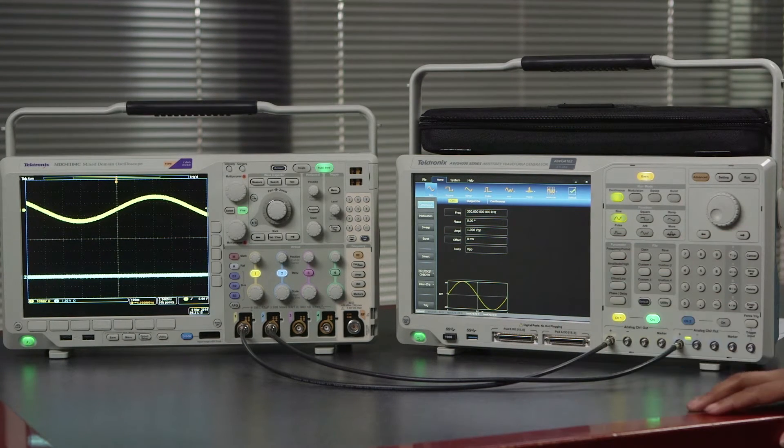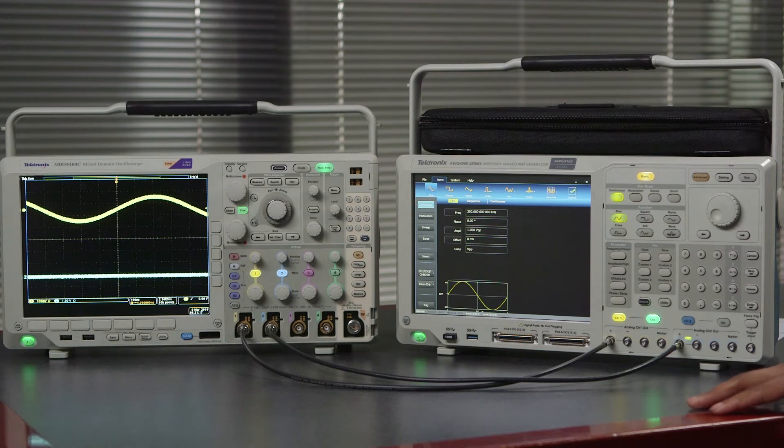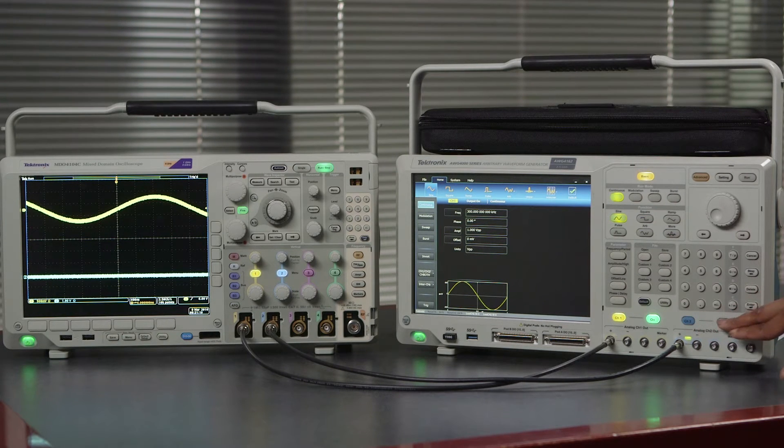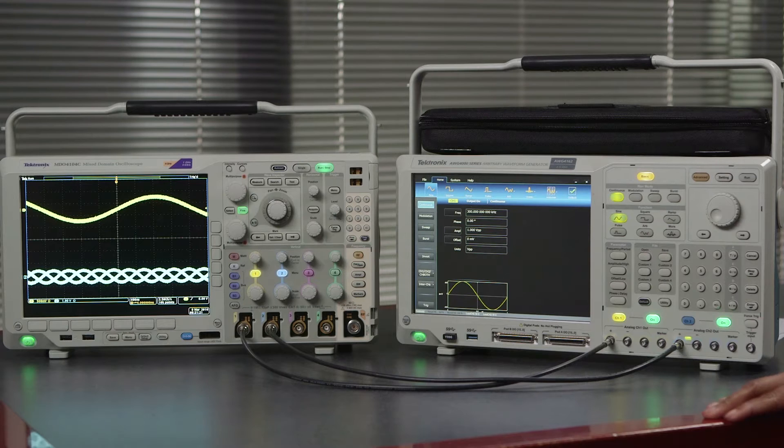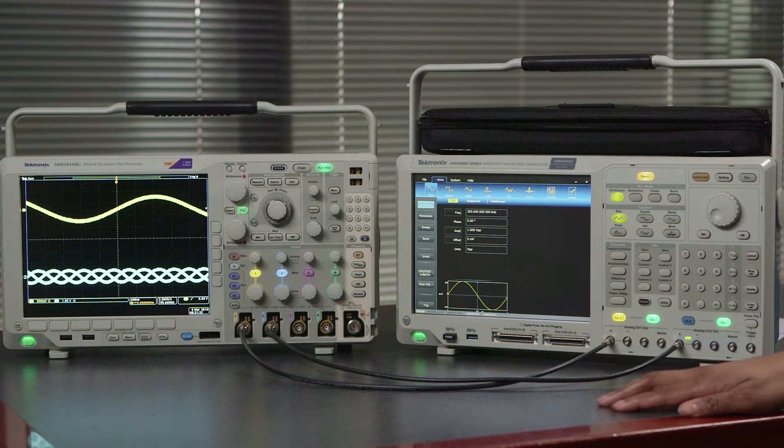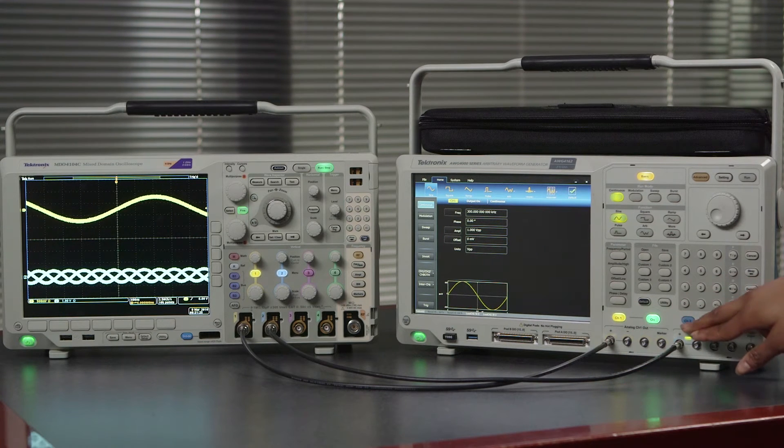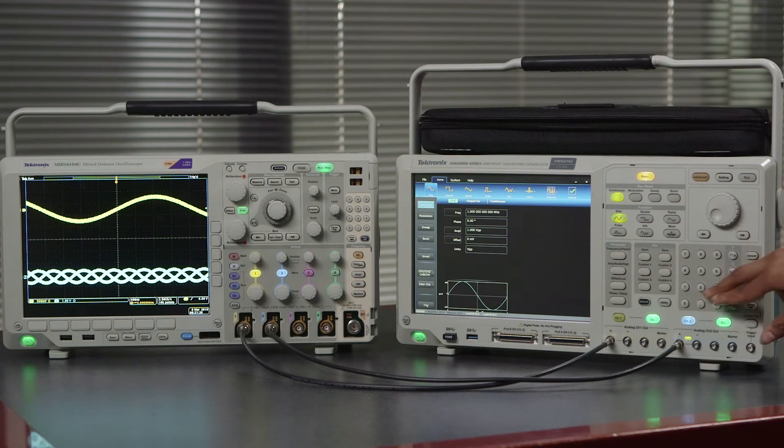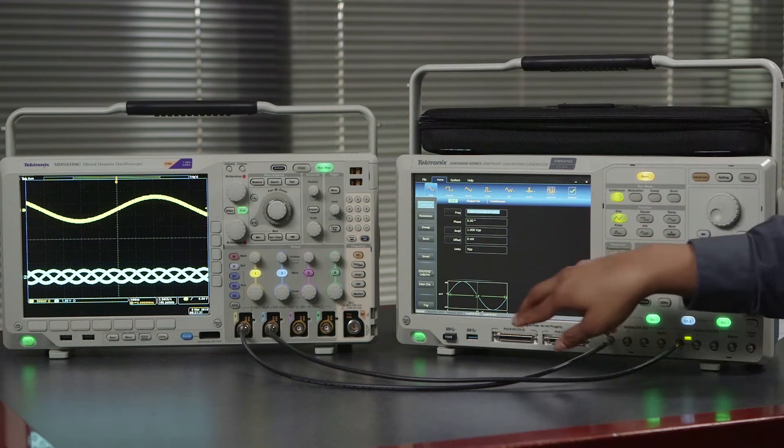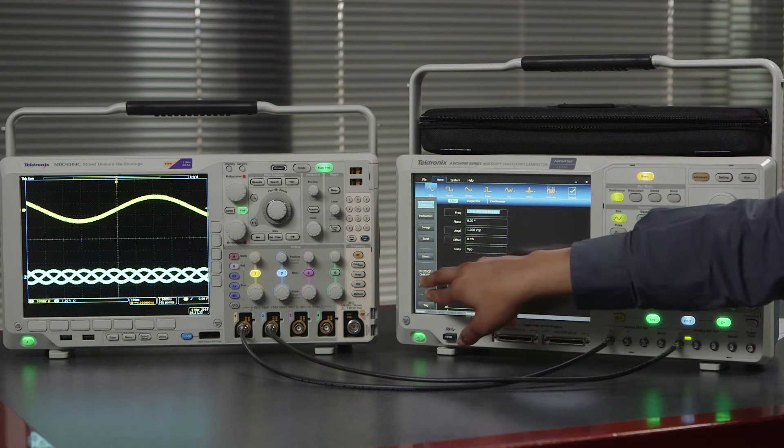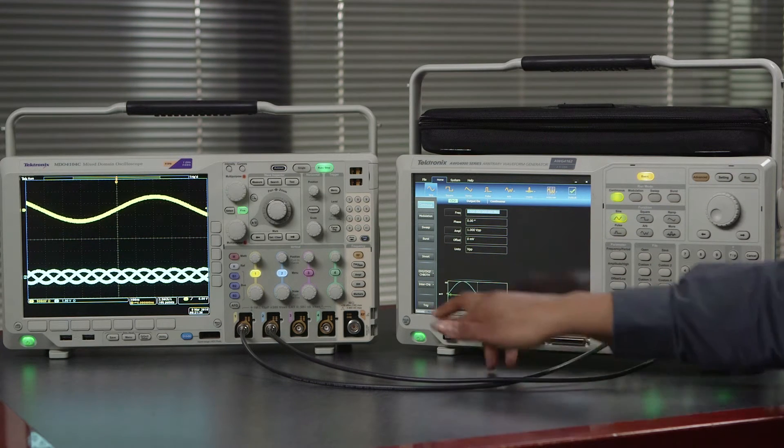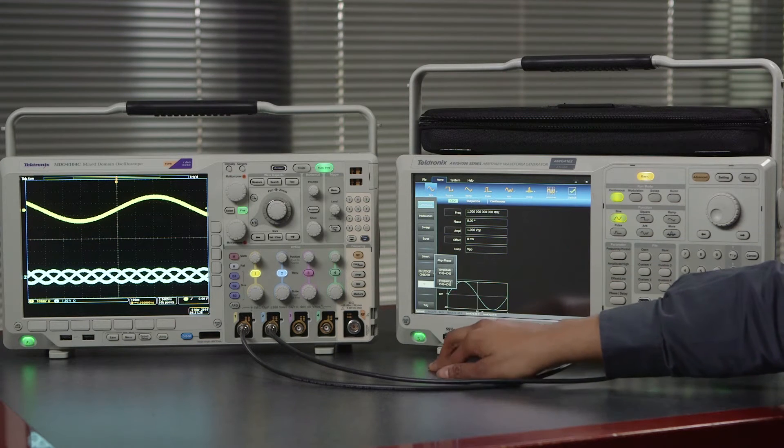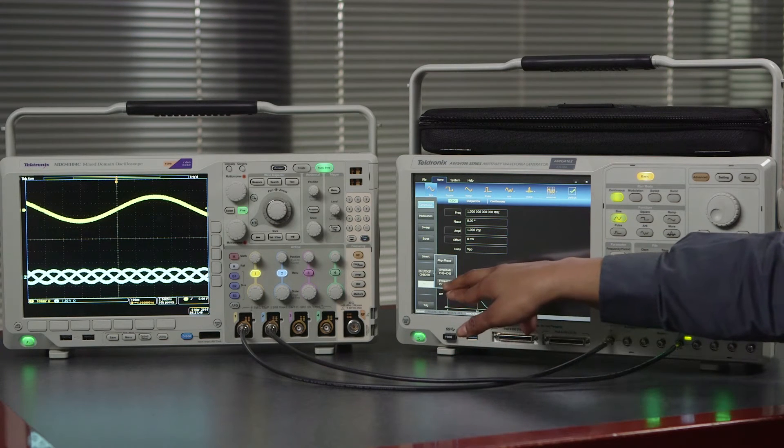If we'd like to output not just one but two signals we need only to go ahead and turn on the second. To be able to change the second we can switch over by pressing the channel 2 button. Here we can also change the frequency to match, or if we want both frequencies to be the same we choose the interchannel button and select that we want both frequencies to be equal.